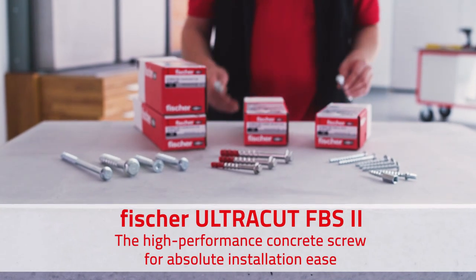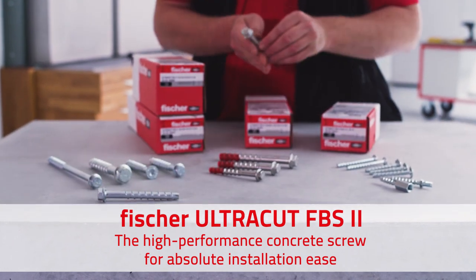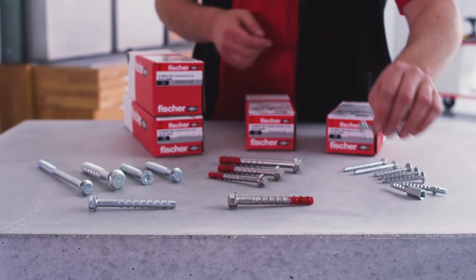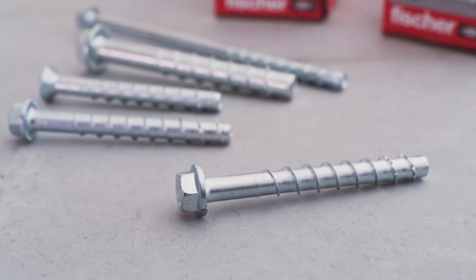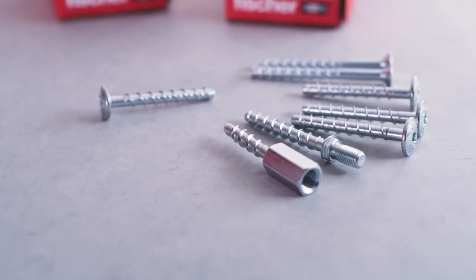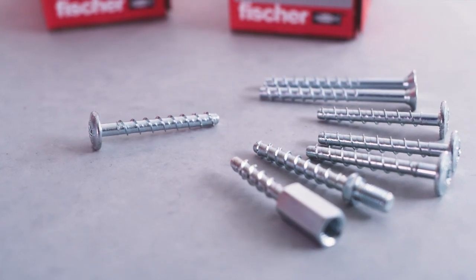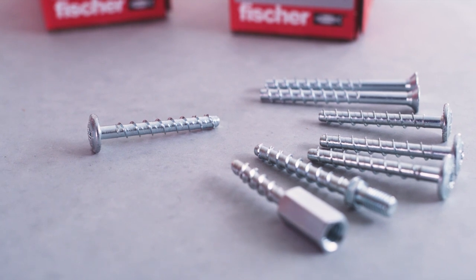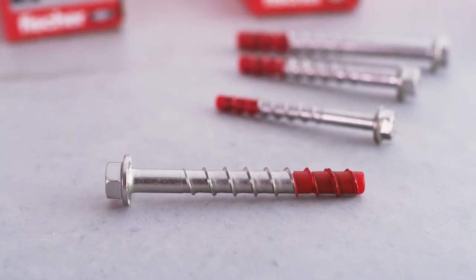Fischer Ultracut FBS2: The high-performance concrete screw for absolute installation ease. Available in zinc-plated steel with a diameter of 6mm and in A4 stainless steel. For the sanitary, heating, and electrical industries.